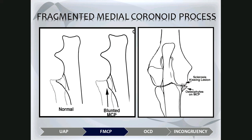In the schematic image, a normal medial coronoid process should be a nice sharply pointed structure, whereas on radiographs, all we often see is that it's blunted. Often we don't see the fragment because it may still be cartilage and therefore radiolucent, or it may be very small, or it depends on beam angulation. Additionally, a kissing lesion may sometimes be seen on the medial humeral condyle in the subchondral bone, due to abrasion from the displaced fragment or osteophytes on the medial coronoid process.